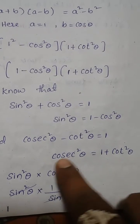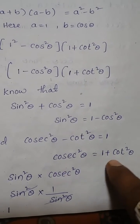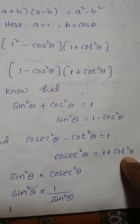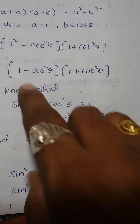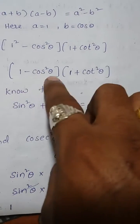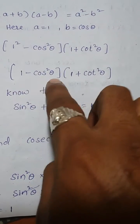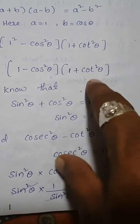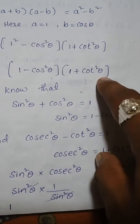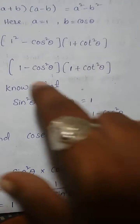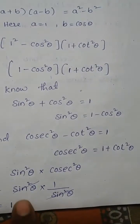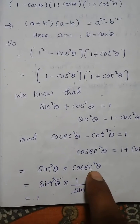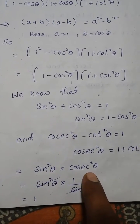Substitute cosec square theta in place of (1 plus cot square theta), and substitute sin square theta in place of (1 minus cos square theta). So we now have sin square theta into cosec square theta.